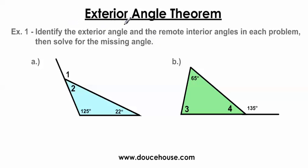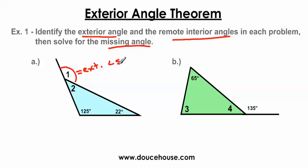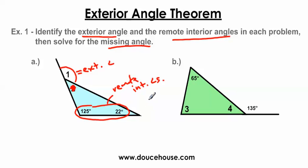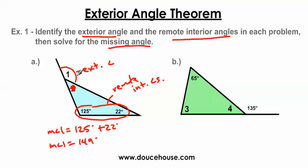Let's do example problems. Identify the exterior angle and the remote interior angles in each problem, then solve for the missing angle. The exterior angle is the only angle outside of the triangle. If I eliminate the adjacent interior angle to the exterior angle, it leaves me with the two remote interior angles. So we know the exterior angle is the measure of angle 1, and it equals the sum of the two remote interior angles. Taking 125 plus 22 degrees, I get 149 degrees. So the exterior angle is equal to 149 degrees — adding the two remote interior angles always equals the exterior angle.